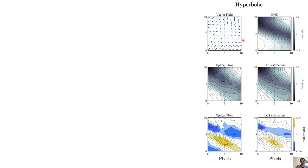In the hyperbolic region, if we look at the DNS results — the DNS vector field, the DNS vorticity contour — and compare optical flow and LCS-based optical flow estimation, we can see some improvement. Looking at the error map, we have high error in the region where you have a saddle point, but we can see improvements compared to the classic optical flow.